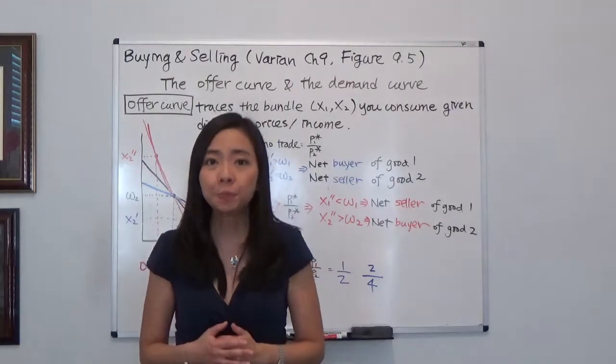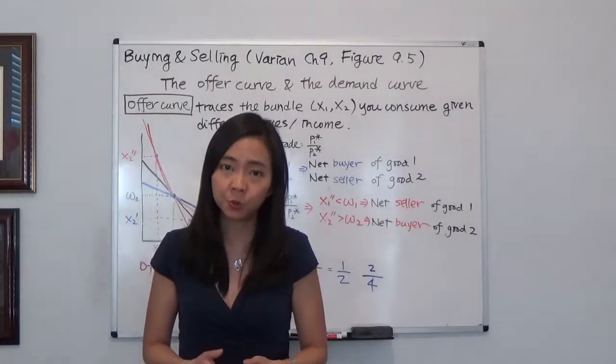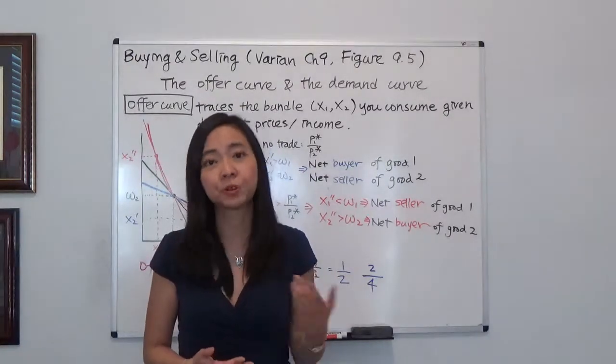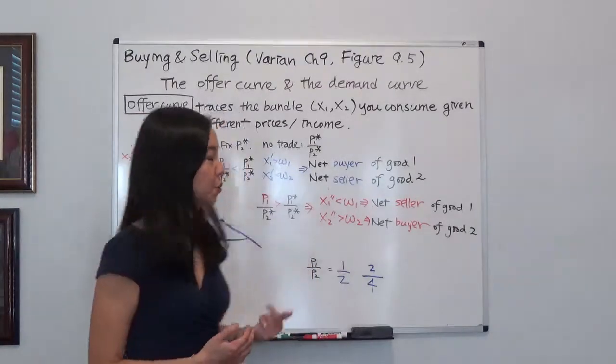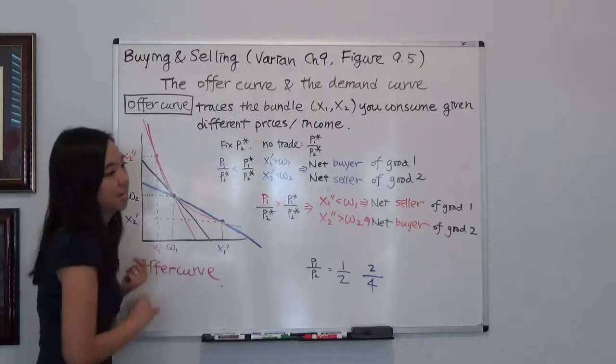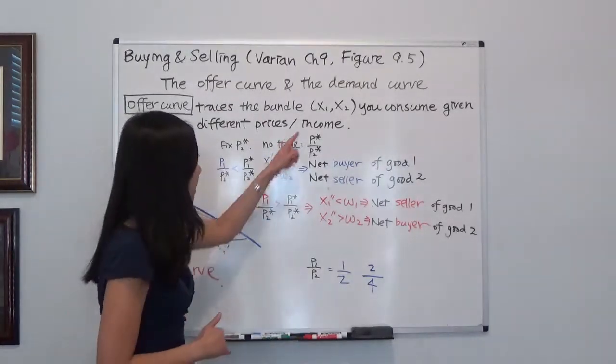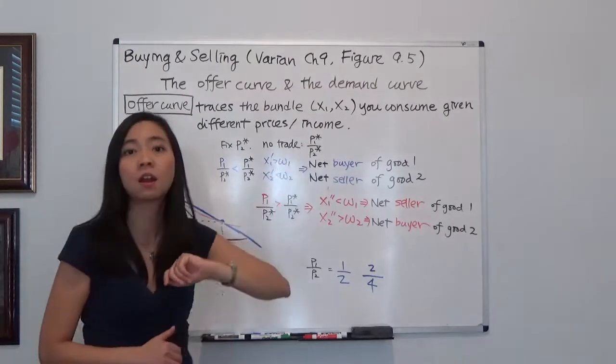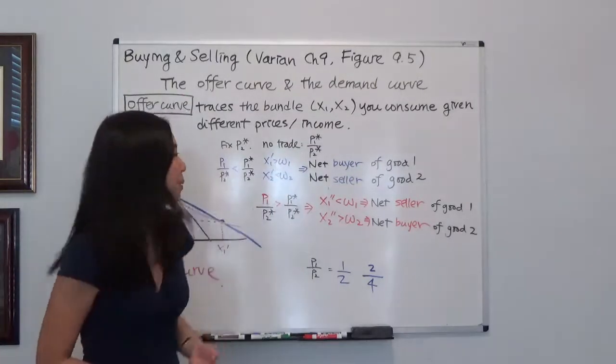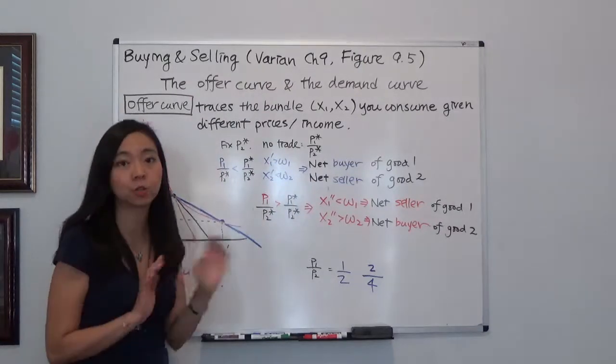If you remember, the offer curve traces the bundle X1 and X2 that we're going to consume given different income or different prices, and here we're given an endowment omega 1 and omega 2. Now suppose the price of good 1 and good 2 are P1 star and P2 star respectively. Suppose when the price is like that I'm happy with my bundle and I don't want to trade.